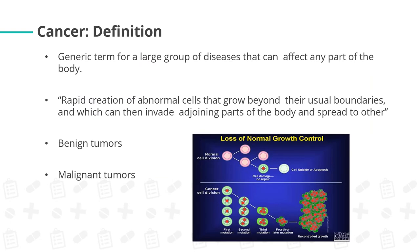Now let's move to the third non-communicable disease: cancer. Cancer is a generic term for a large group of diseases that can affect any part of the body — a rapid creation of abnormal cells that grow beyond their usual boundaries and can invade adjoining parts of the body. We have two types of tumors: benign and malignant. Benign tumors are abnormal cell growths that do not proliferate or metastasize. Malignant tumors are harmful tumors with excessive growth rate that metastasize and spread to other parts of the body, creating their own blood vessels to supply nutrients.